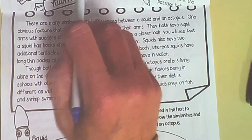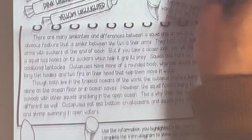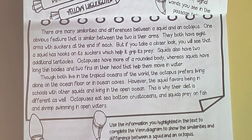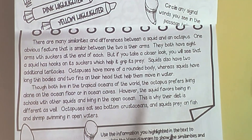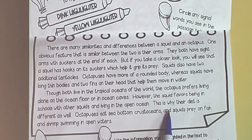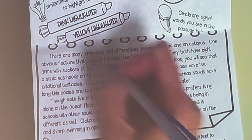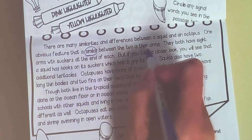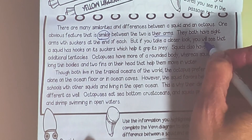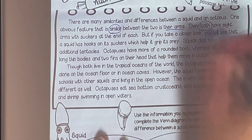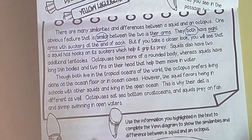So what are some of the signal words? They're up here: same, similar, alike, and both. Let's find some of the ways octopuses and squids are the same. Give me one, Bryson. One feature that is similar between the two is their arms. So we're going to circle 'similar,' and their arms are similar. And then over here — this goes along with arms — it says 'both have eight arms with suckers at the end of each.' So that's one way they're similar.